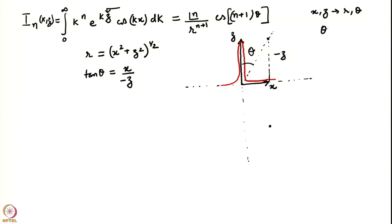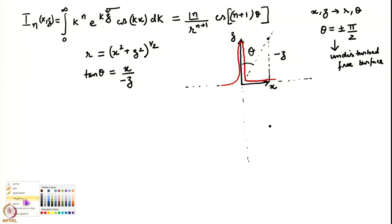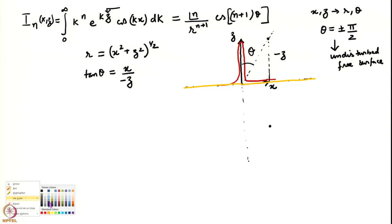It is clear that theta equal to plus or minus pi/2 represents the undisturbed interface — the free surface — that is, the line extending to the right (theta = +pi/2, shown in blue) and the line extending to the left (theta = -pi/2, shown in yellow). Going to polar coordinates will simplify some of our calculations. We have written down the formula for the integrals and once we have done that, let us write the solution for phi.